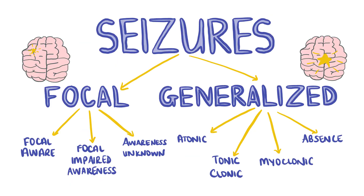Seizures can be focal, which is a type of seizure that begins on one side of the brain, and patients either retain consciousness or have impaired consciousness. Or they can be generalized, where both sides of the brain are affected and consciousness is not lost. Symptoms of a seizure vary depending on the subtype and part of the brain affected.